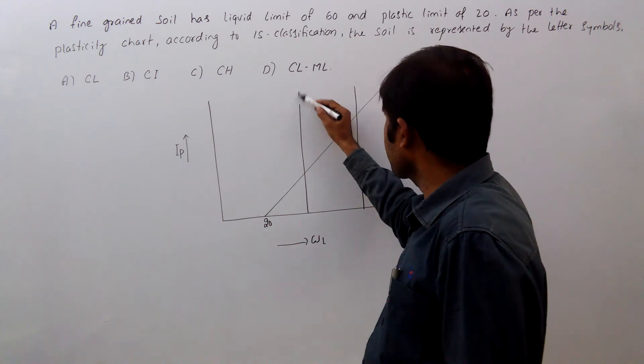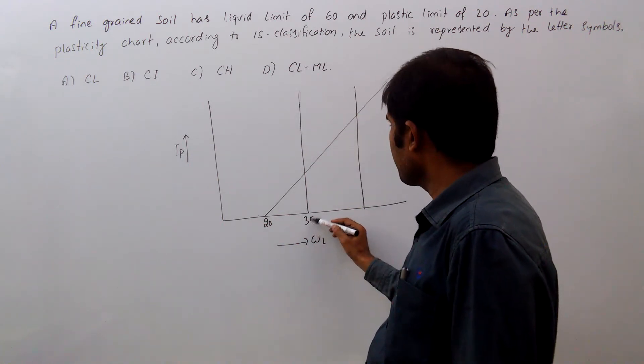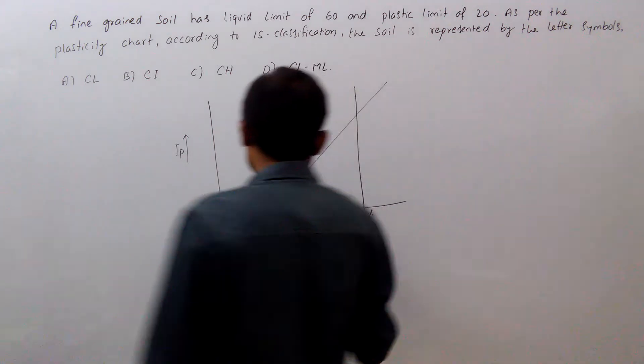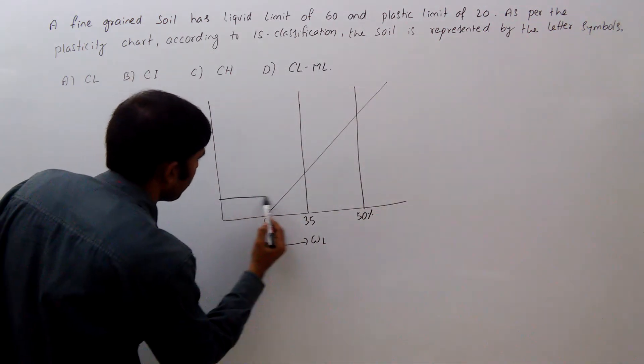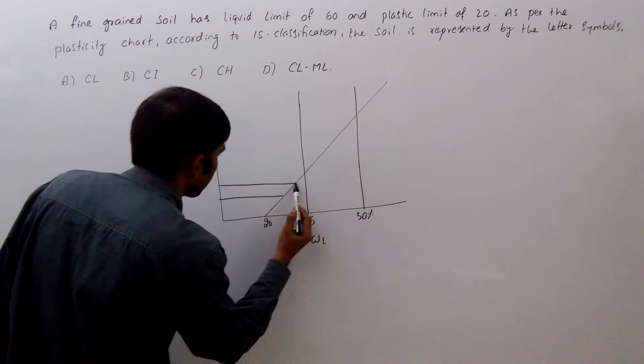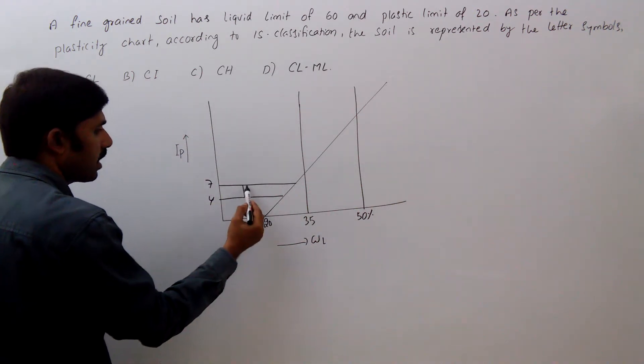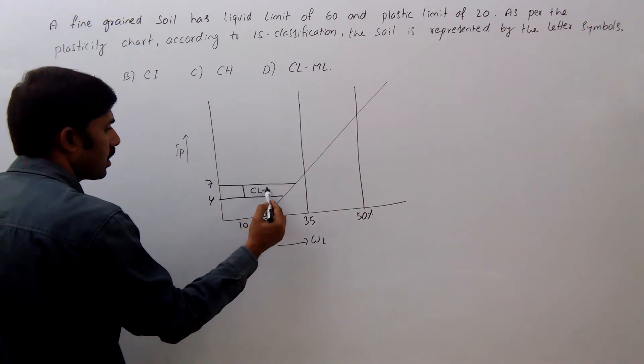At 35% and 50%. And here two bands will be there like this at 4% and 7%. At 10% vertical line here. This zone is CLML.